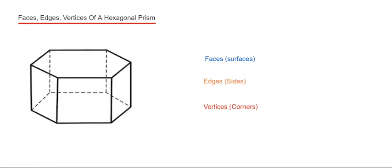Hi guys, welcome back. This is Matt's 3000. Today we're going to look at the number of faces, edges, and vertices of a hexagonal prism.